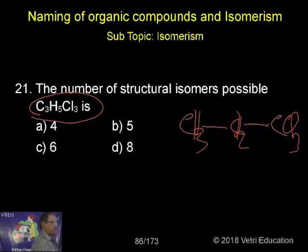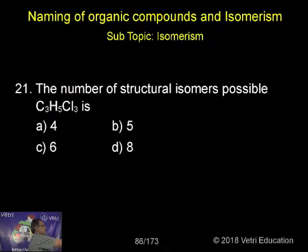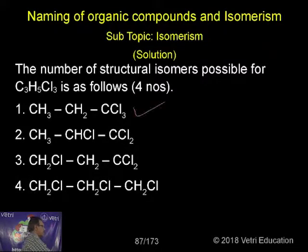One possibility is placing all three chlorines on the first carbon — CCl₃ — and we can rearrange from there. This gives us the first structural isomer, as you can see written here.